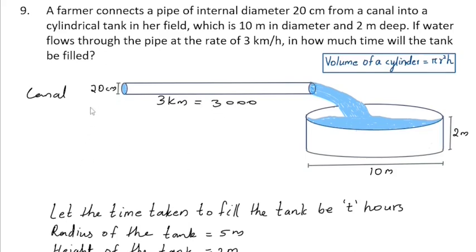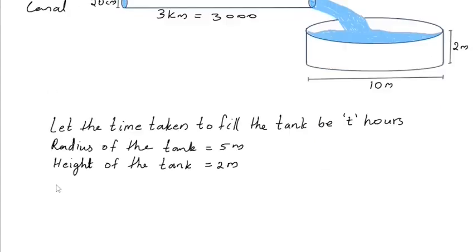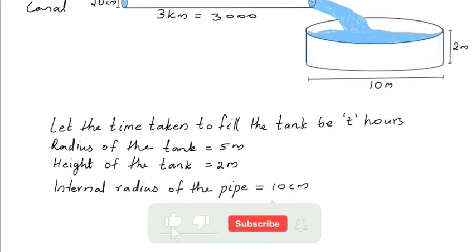The internal diameter of the pipe is 20 cm, so the internal radius of the pipe is 10 cm. Converting into meters, we get 0.1 m. The length of the pipe is 3000 m.